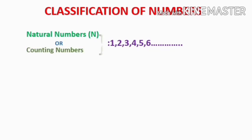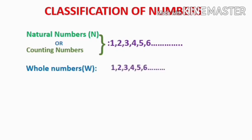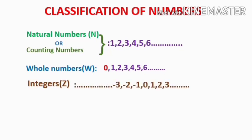The next classification is whole numbers. Natural numbers include 1, 2, 3 and so on. When we include zero with the natural numbers, we get the whole numbers. The next type is integers. Integers are the combination of negative numbers, zero, and positive numbers.